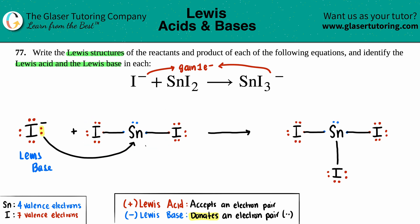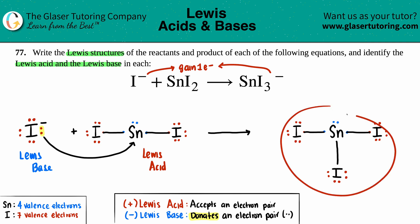Just know that the Lewis base and Lewis acid are both found on the reactant side. Generally, if you see a negative charge, that's probably going to be the Lewis base. If you want to find the actual formal charge on the compound, the formal charges show that tin ends up with a negative charge. I really hope this helped — let me know in the comments, subscribe to the channel, and I'll talk to you later!